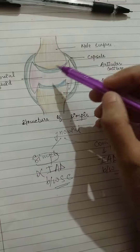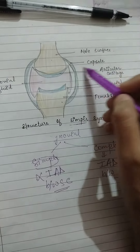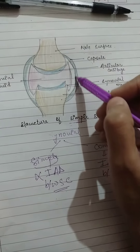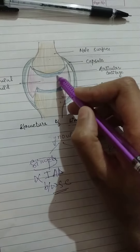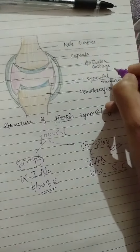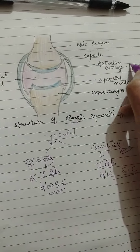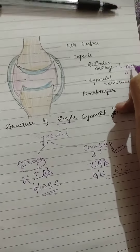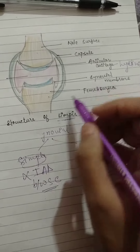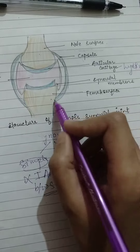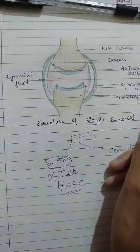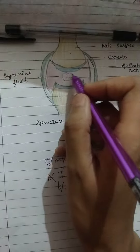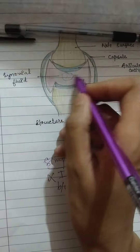You can see the upper surface is called the male surface. This is a fibrous capsule, and the articulating cartilage, which is hyaline cartilage. This is the synovial membrane, this is the female surface, and synovial fluid is present in this area.